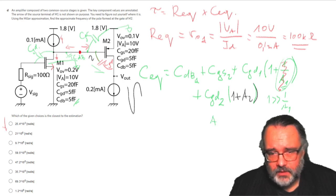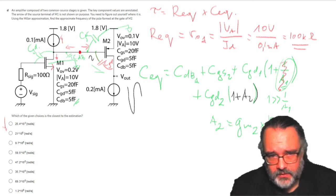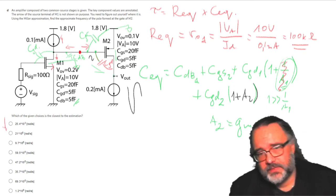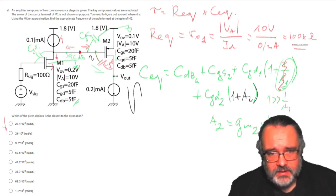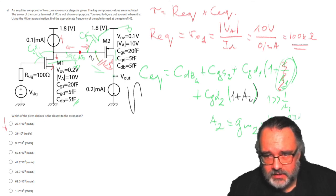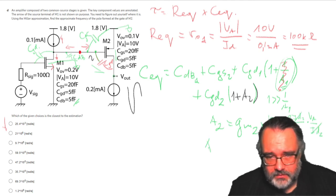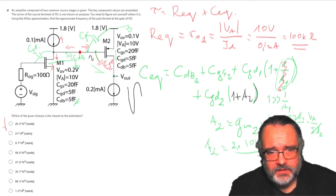What will be A2? A2 will be gm2 times Rout2. This voltage is transferred through gm to current, and this current is transferred through the output impedance to voltage. gm2 is 2 times the drain current divided by the overdrive voltage, and Rout is VA divided by the drain current. This will cancel.